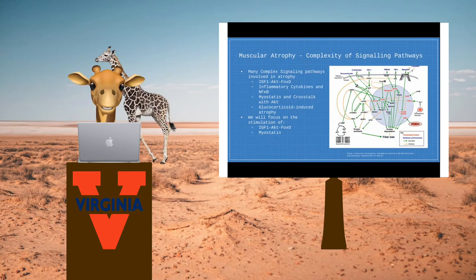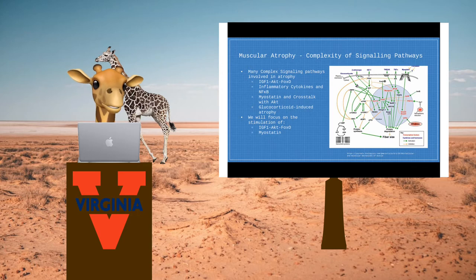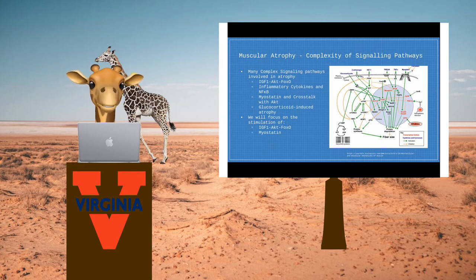As you can clearly see in the diagram to the right, there are many complex signaling pathways involved in atrophy. However, in this video, we will primarily focus on the stimulation of the IGF-1, AKT, FOXO, and the myostatin pathways.